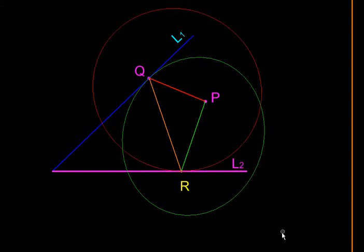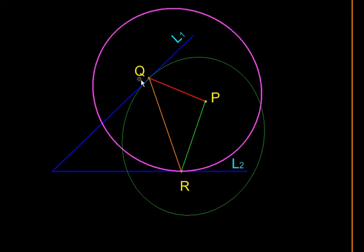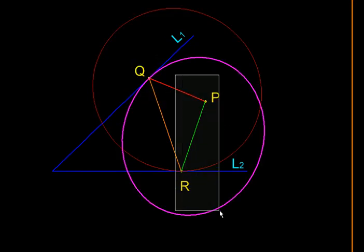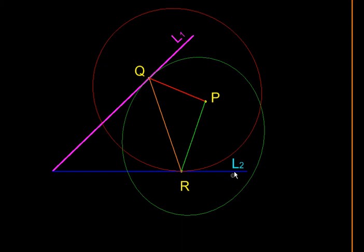So this is that ellipse. So we have found now two ellipses. One is this red one with Q and P as the two foci, and the other is this green one with P and R as the two foci. And these two ellipses have lines L1 and L2 as their tangents.